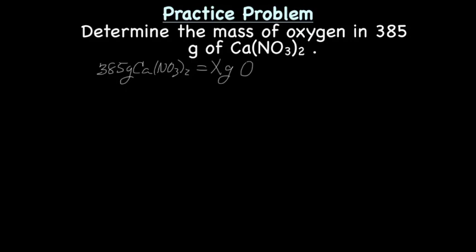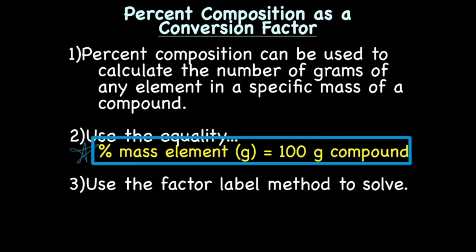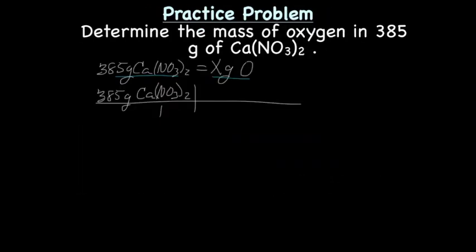Okay, now, just like normal, we set up our grid and we put 385 grams of Ca(NO3)2 over 1. Now, we're looking for an equality that has grams of a compound and grams of an atom. We have that equality, right? Right here. Percent mass of the element in grams equals 100 grams of the compound. So, what we're really looking for is percent mass of the element, in this case, percent of oxygen, equals 100 grams of Ca(NO3)2.